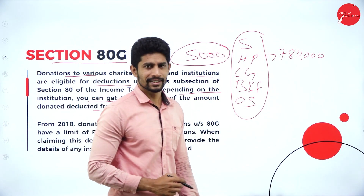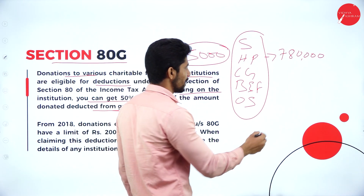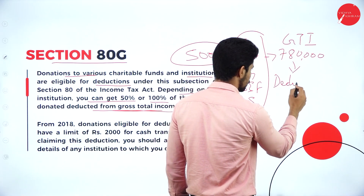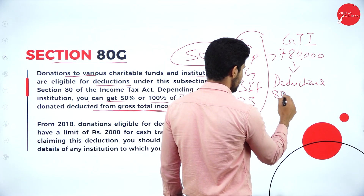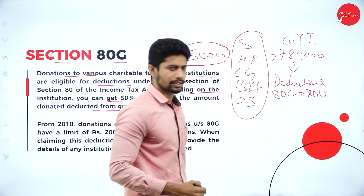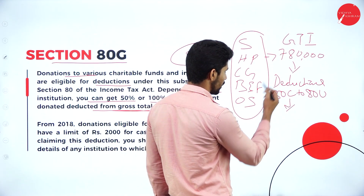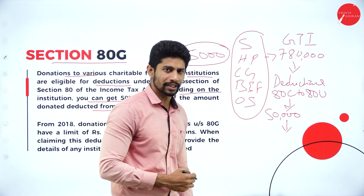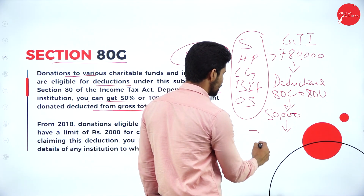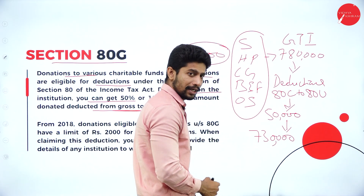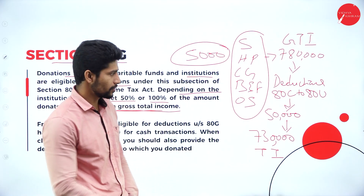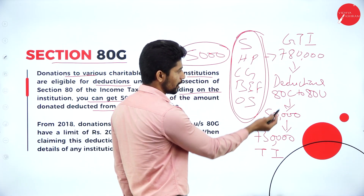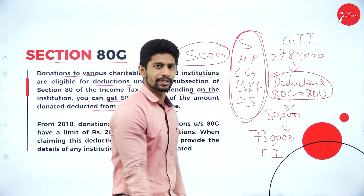From the gross total income (GTI), we deduct the deductions under Section 80C to 80U. Whatever balance you get after those deductions is called taxable income. For example, from a GTI of 7,80,000, if you give a deduction of 50,000 rupees under Section 80C to 80U, the balance of 7,30,000 is your taxable income — the income on which tax will be imposed.